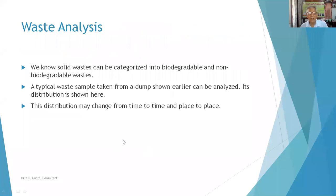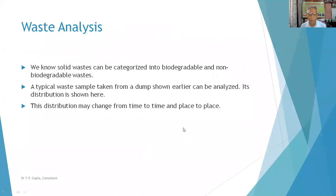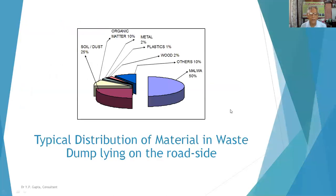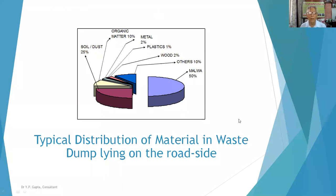Solid waste can be categorized as biodegradable and non-biodegradable. A typical waste sample collected from the roadside can be analyzed, and its distribution by material type is shown. The distribution can change from place to place — this is a typical distribution of different materials found in roadside waste.